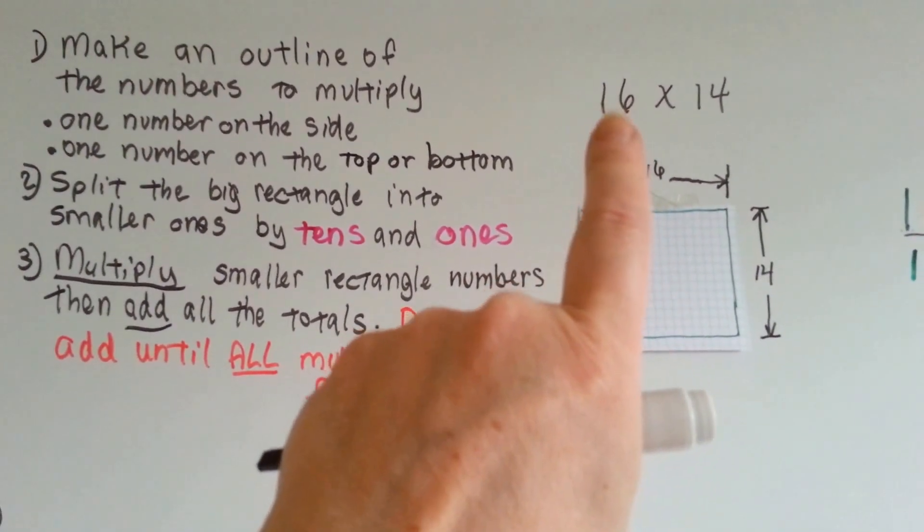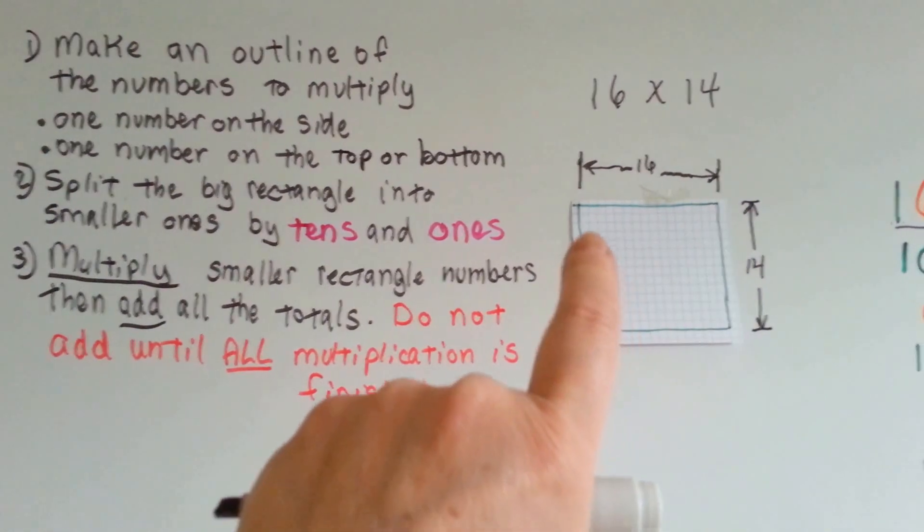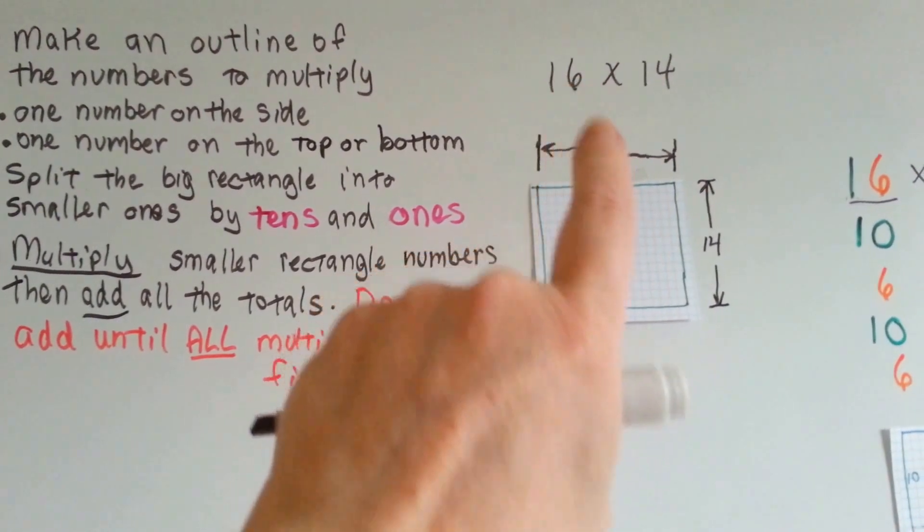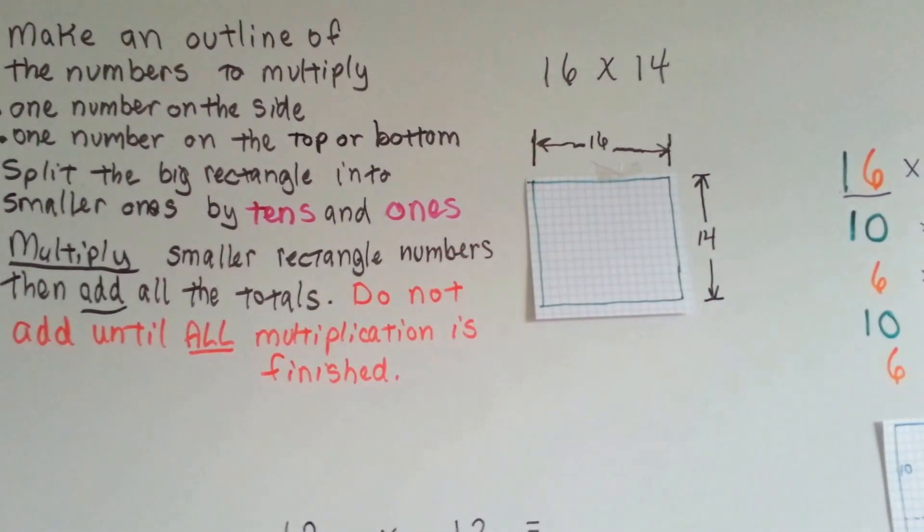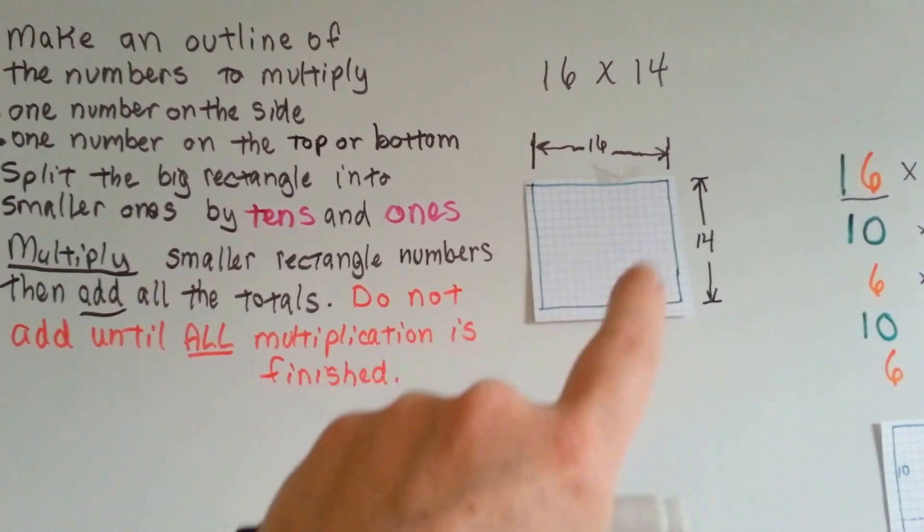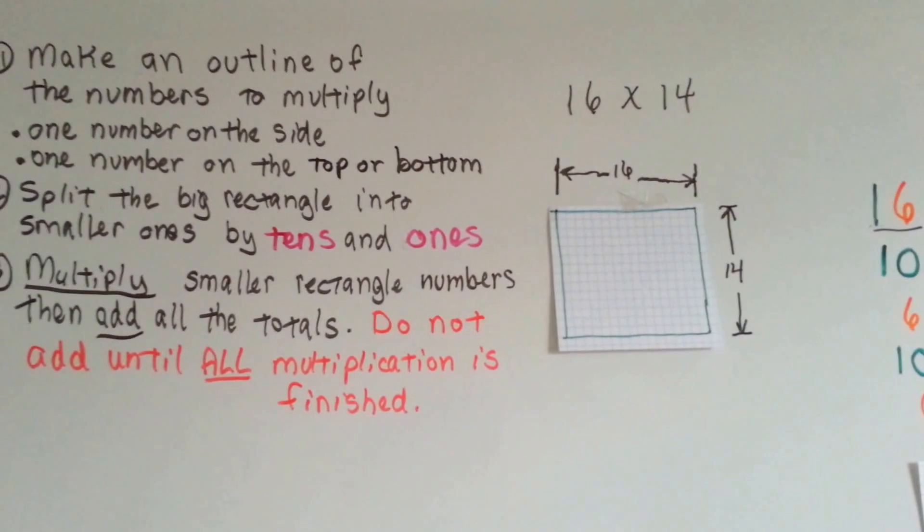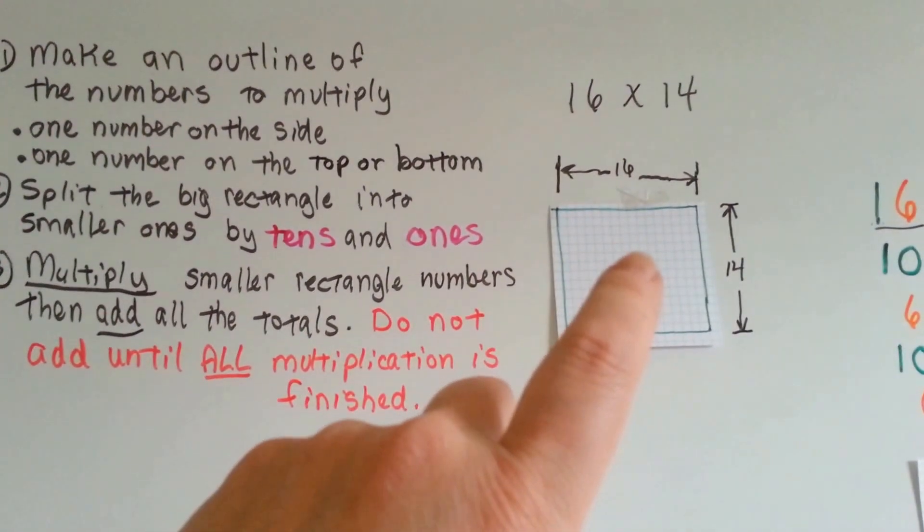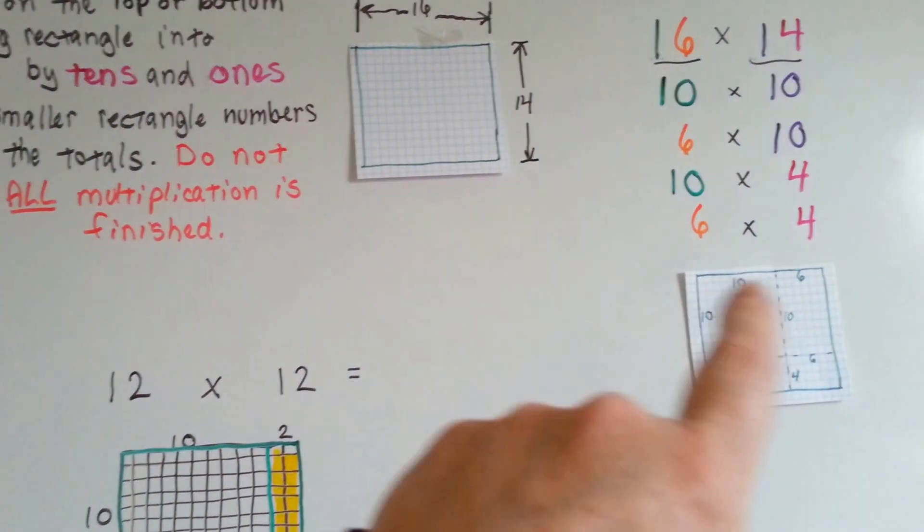If we want to multiply 16 times 14, we're going to get some graph paper and some little boxes on it, and we're going to count 16 boxes going this way for that 16, and 14 boxes going down for that 14. And however many number of boxes inside of here is what 16 times 14 equals. We're going to split this big rectangle into smaller ones by the tens and ones.